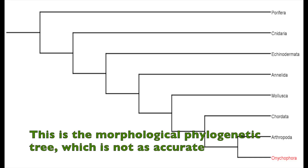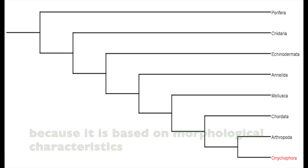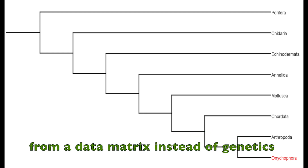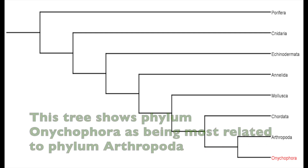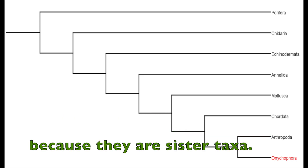This is the morphological phylogenetic tree, which is not as accurate because it is based on morphological characteristics from a data matrix instead of genetics. This tree shows phylum Onychophora as being most related to phylum Arthropoda because they are sister taxa.